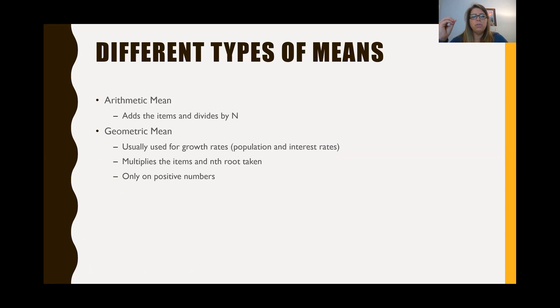However, you can do some really cool things with ratio variables where you can start calculating these geometric means. And these are usually used for growth rates. So growth in population, growth in interest rates. And this multiplies the items and then takes the nth root. So a little bit different calculation. And you can only use positive numbers, but it's considered the geometric mean.